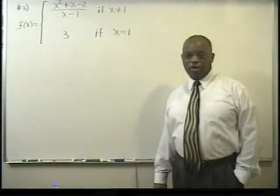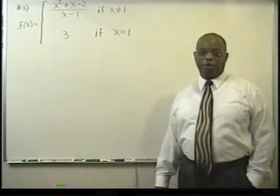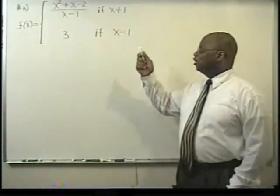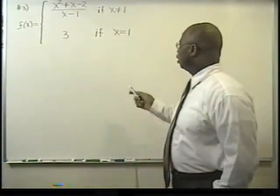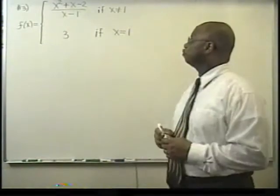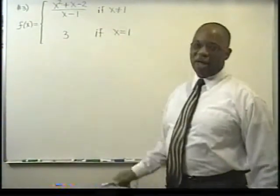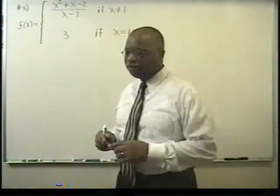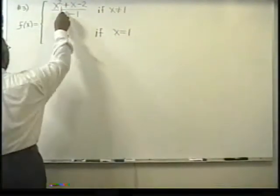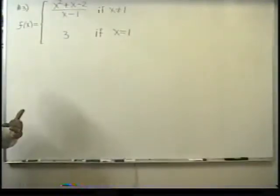So the first thing we need to take a look at is criteria number one of the definition of continuity. Does this function have a limit? Does the limit for this function exist as we approach one? Well, again, from the original function, we're not allowed to use one, but we did find out that the numerator is factorable.